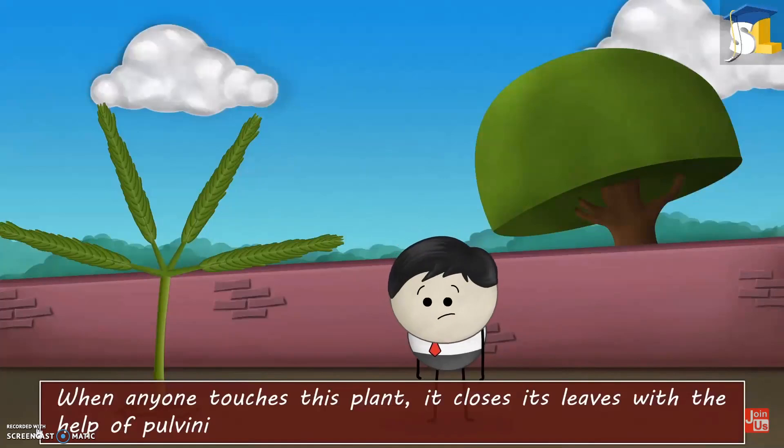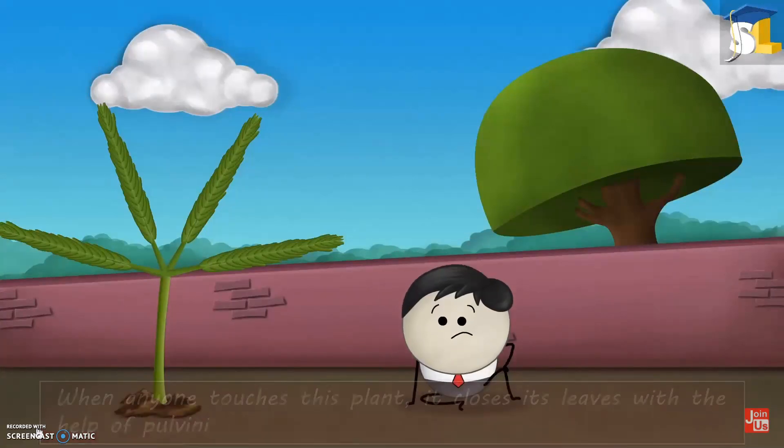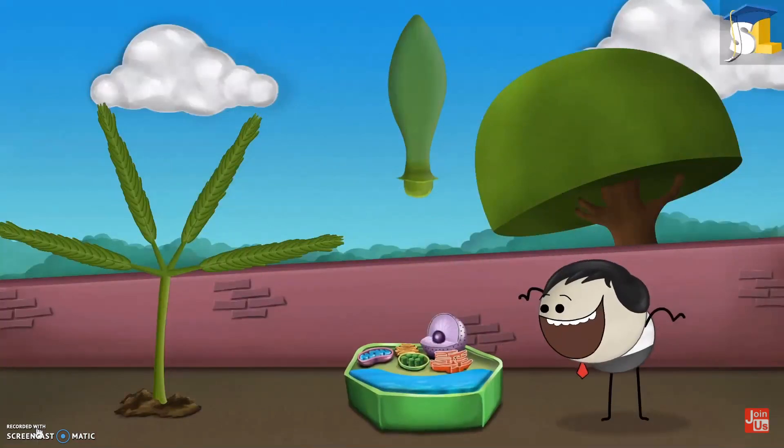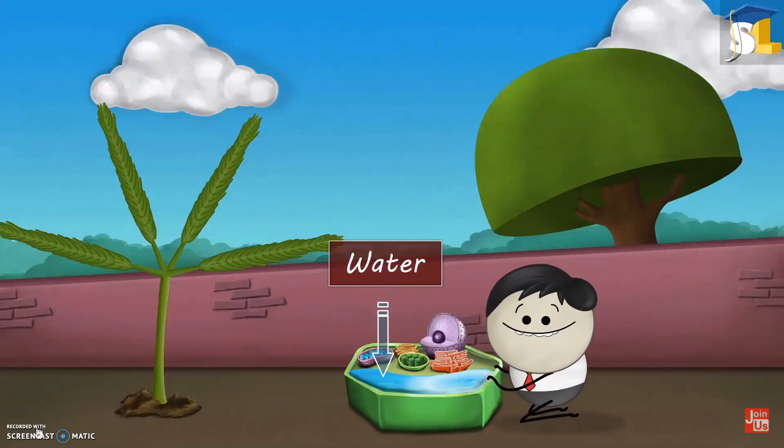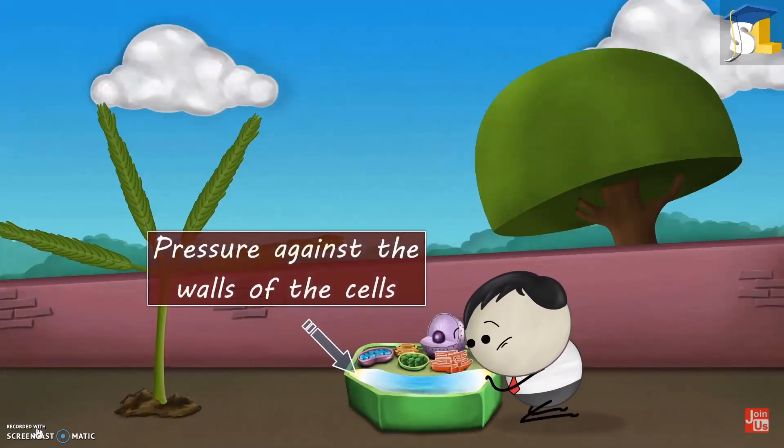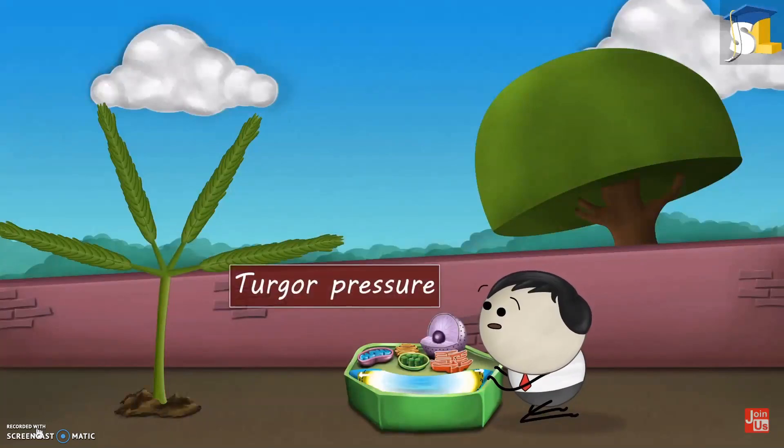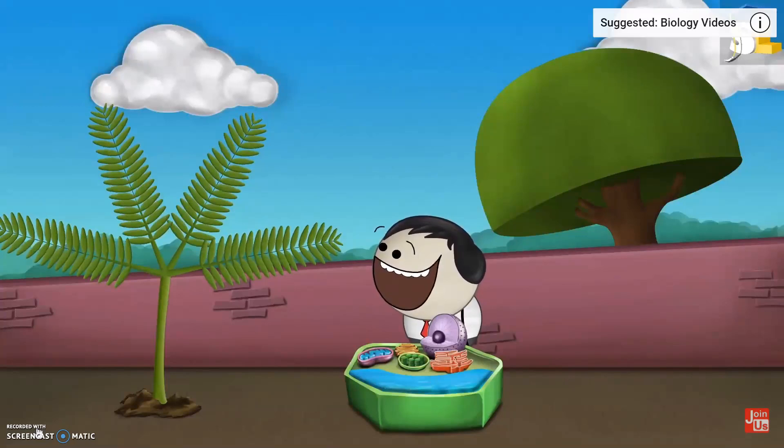When anyone touches this plant, it closes its leaves with the help of pulvini. Pulvini are present at the base of each leaflet. They consist of cells filled with water. This water applies pressure against the walls of the cells. This pressure is called the turgor pressure. It helps the leaflets to stand upright.